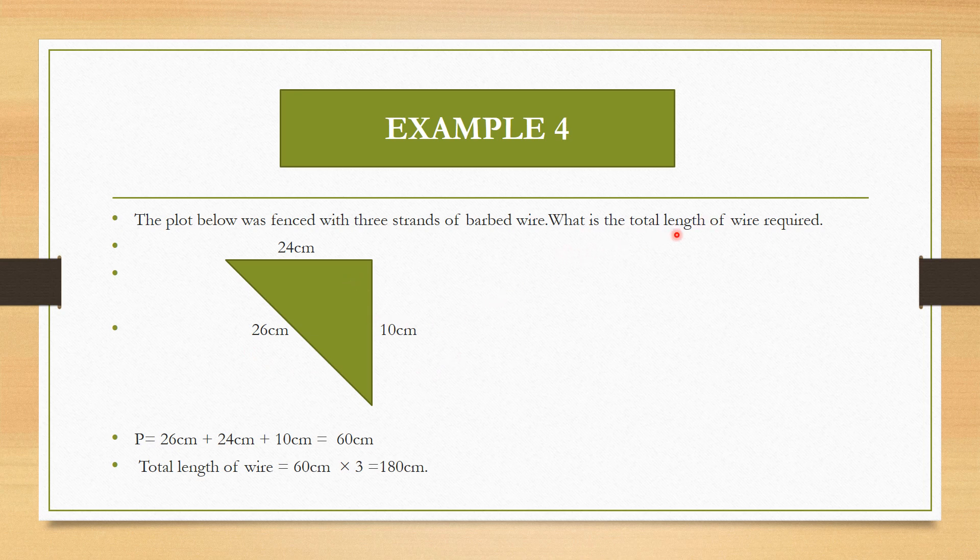What is the total length of wire required? After getting our perimeter, we will just multiply by the number of strands, because 3 strands means you are moving 3 rounds. So let's start with our perimeter: 26 plus 24 plus 10 will give you 60cm. That is the perimeter of this figure. Then multiply by the number of strands, which is 3. 60 times 3 equals 180cm. So the total length of wire required is 180cm.